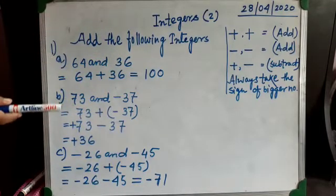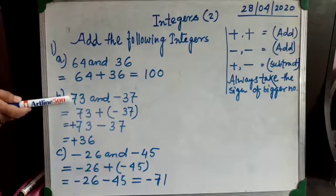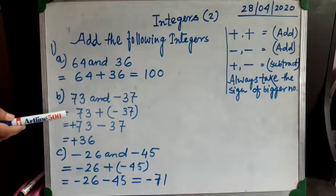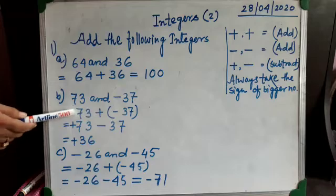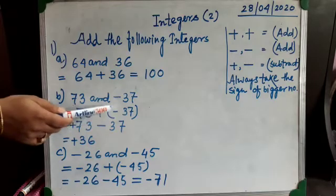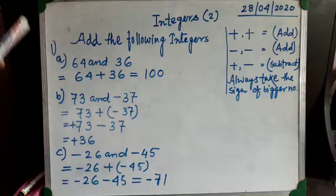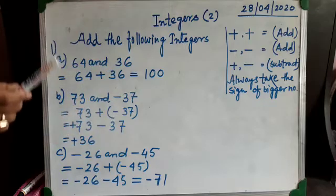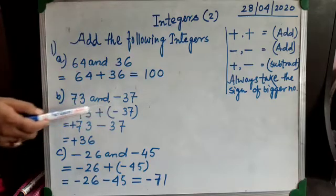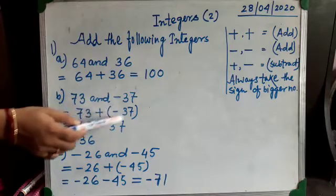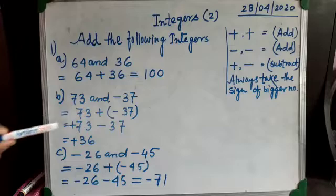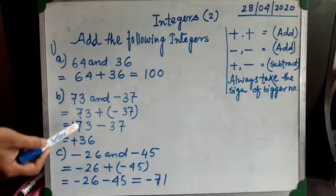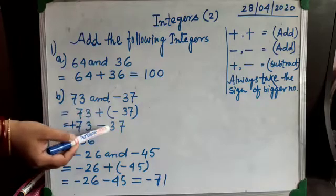Question B: 73 — no sign is given, so it is a positive number — and 37 is a negative number. We have to add them, so I have written 73 plus (minus 37). You may ask why I used brackets: because two signs cannot sit together, so I placed the second number in brackets. Taking the number out of the bracket, I have written 73, which is a plus number, then plus minus 37.